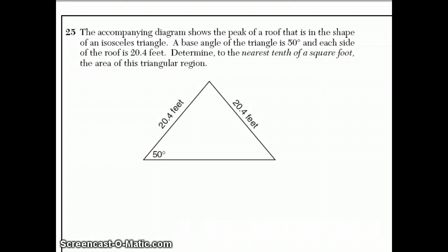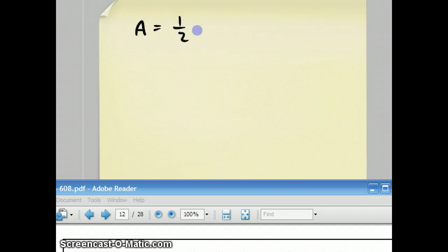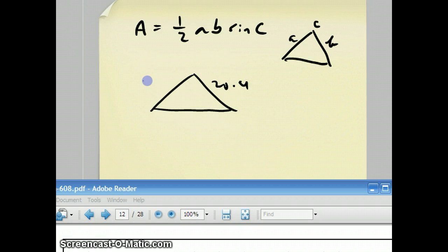Moving on to question 25. They want to know what's the area of this triangle where they've given you an isosceles triangle, 20.4, 20.4, and 50. There is a formula that's given to you in the back of the Regents booklet. It's area equals 1 half AB sine C. And this formula is used when you have a triangle, and you know an angle, and you know the two sides around it. And that is pretty much what we have going on in this situation, 20.4, 20.4. The only thing is they gave us this angle here is 50, and we wish we knew this angle. Well, because it's an isosceles triangle, this is also 50. And they add up to 100, which means this angle is 80.